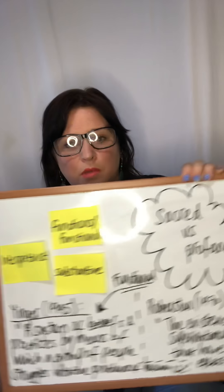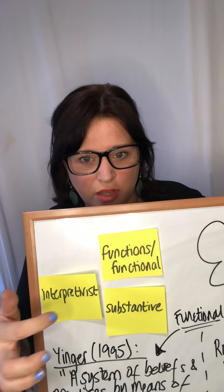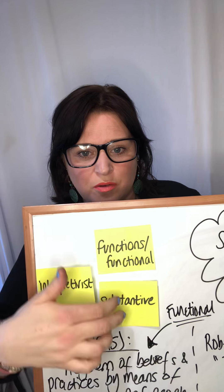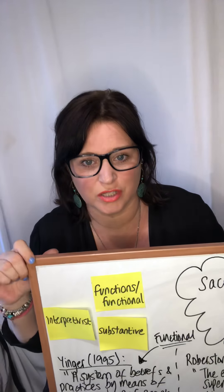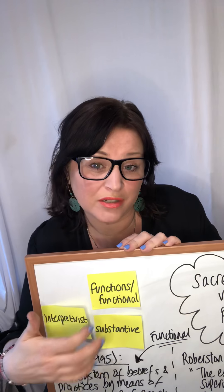So the first thing we're going to talk about is there are really three types of explanations — or ways of defining religion. We've got functional explanations and substantive explanations. I've created a mind map here that might be helpful, and I'll show you the overview at the end of the video. These functional and substantive explanations of religion explain religion in different ways.